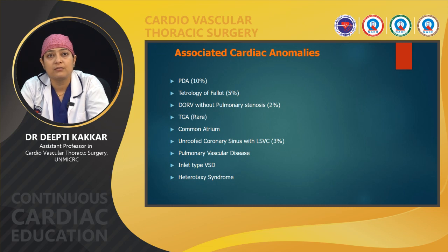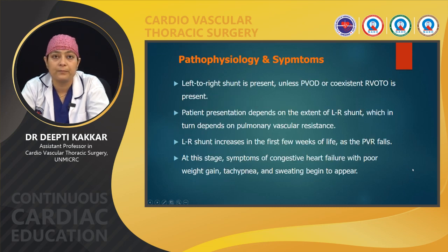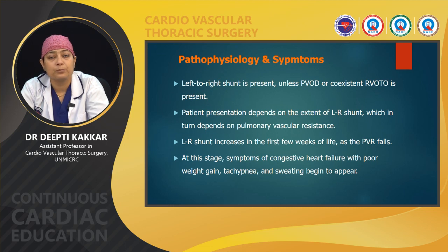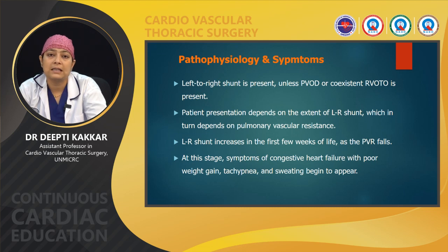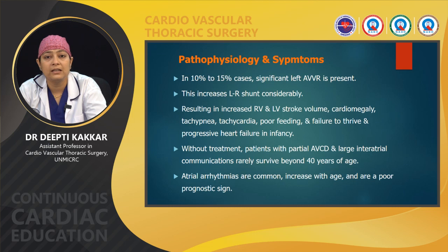Reviewing the pathophysiology: a left-to-right shunt is present in all cases of AVCD unless there is existing pulmonary vascular disease or coexisting right ventricular outflow obstruction. Patient presentation depends on the extent of the left-to-right shunt, which depends on pulmonary vascular resistance. In the first few weeks of life, as PVR falls, the left-to-right shunt increases, rendering the child more symptomatic with congestive heart failure, poor weight gain, tachypnea, tachycardia, and sweating. In 10 to 15 percent of cases, significant AV valve regurgitation is present (left more than right), which increases the left-to-right shunt considerably, causing cardiomegaly, tachypnea, tachycardia, poor feeding, failure to thrive, and progressive heart failure.